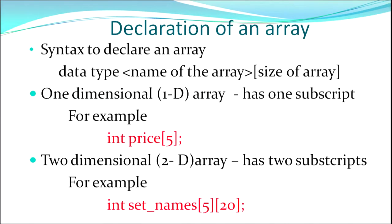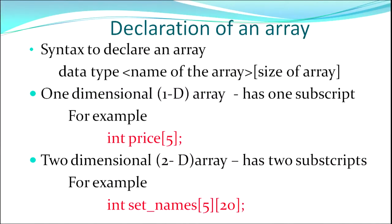Now, how to declare an array. The syntax to declare an array starts with the data type, since an array is a set of elements of similar data type. The data type can be integer, character, float, double, long int — any of the data types you have learnt before. Then we specify the name of the array, and then we specify the size of the array. The size of the array means the number of elements I want my array to contain. In the previous example, I want to store marks for 10 students, so the size of the array will be 10.